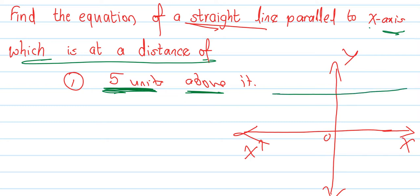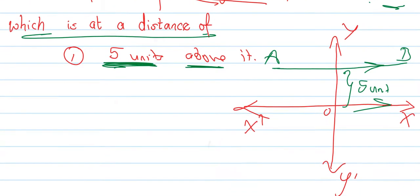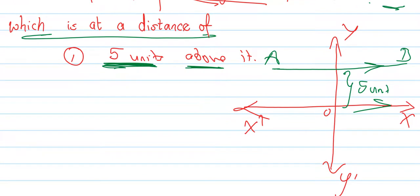So, the line is parallel to the x-axis and is 5 units above it. This means the y-intercept is 5. We don't need any other information — just that it's 5 units above the x-axis, so the y-intercept is 5.